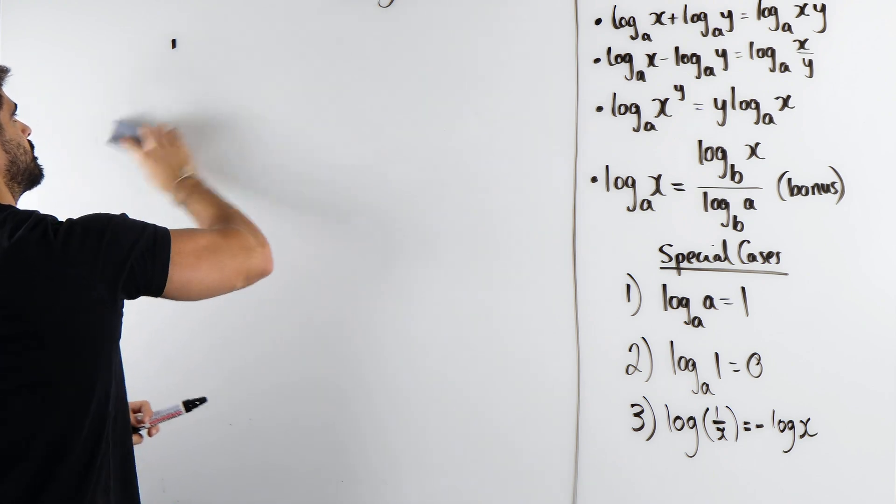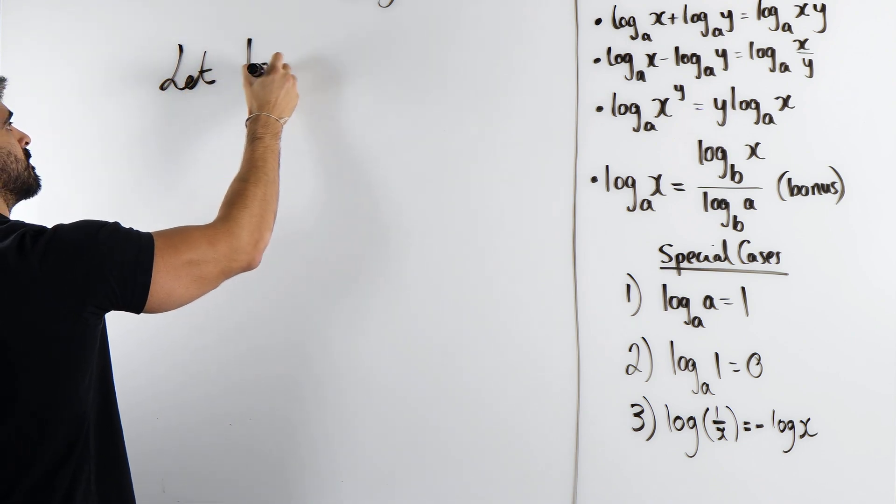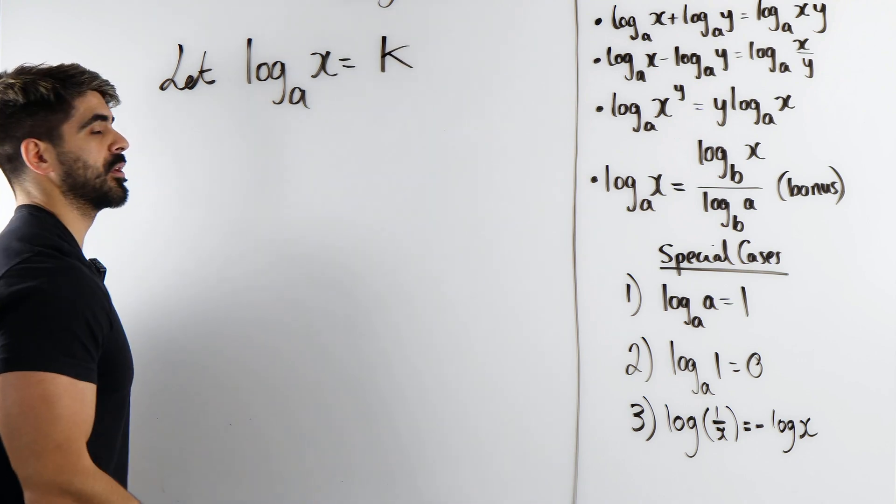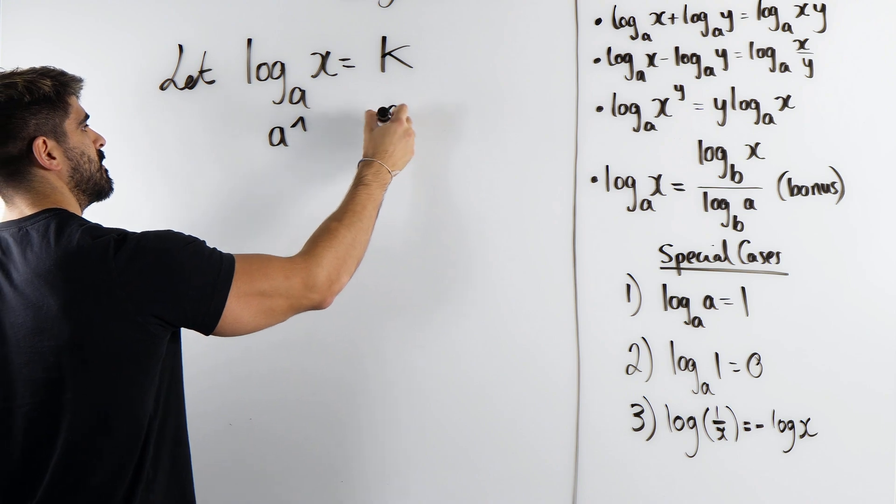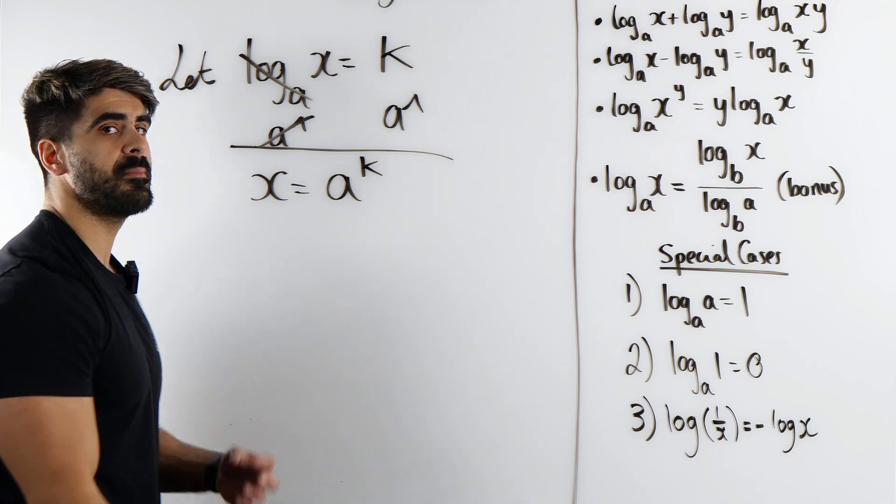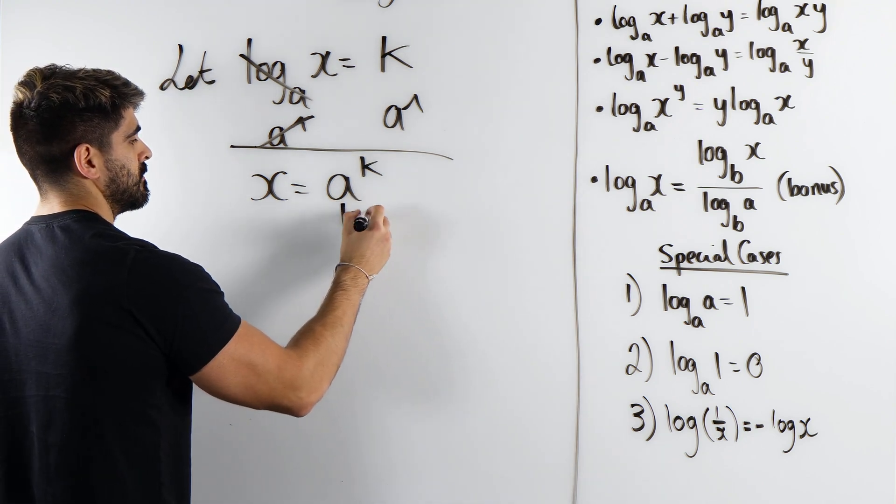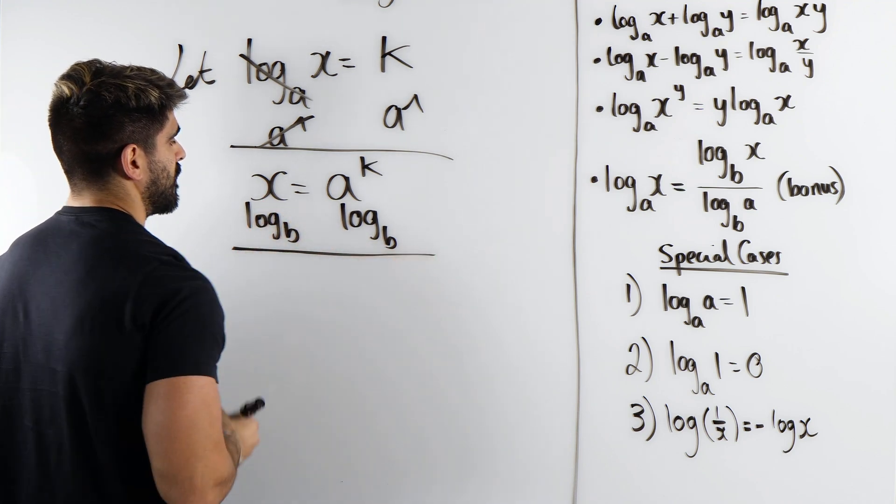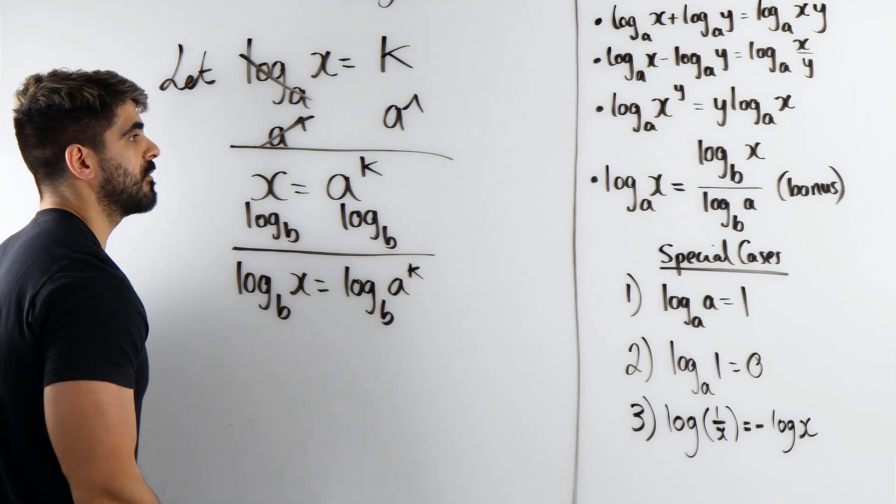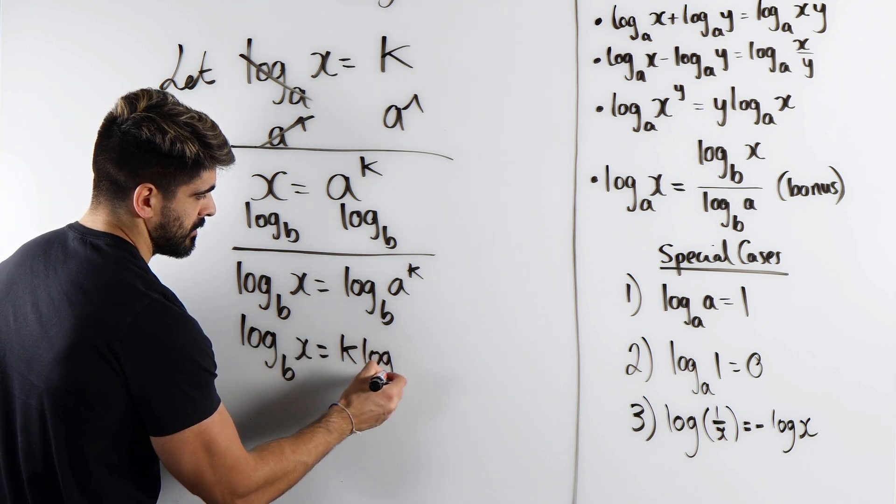It's an easy proof. So let's let log base A of X equal K. What are we going to do? We're going to get rid of the logs. We're going to do A to the power of both sides. So we'll have A to the power of K equals X. Now remember, we want to change the basis. So instead of doing log base A of both sides, I'm going to do log base B. I'm going to change it. Now the unfortunate thing here is that nothing cancels. I get log base B of A to the power of K. However, we can use the rule that I just proved to bring down the K.